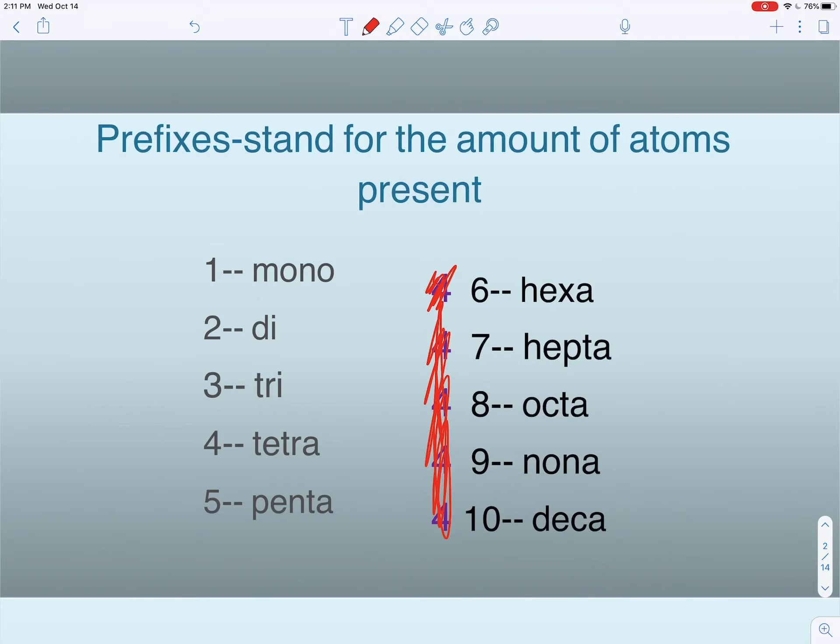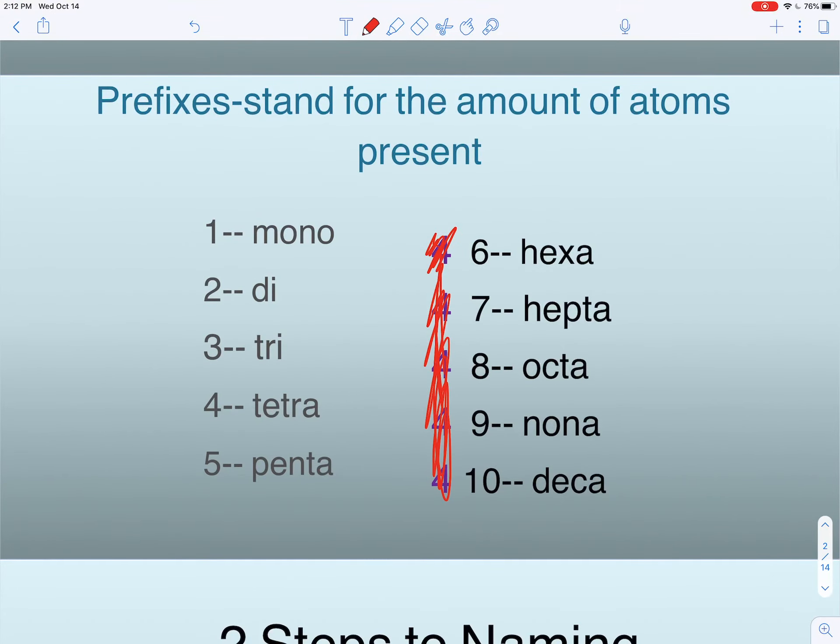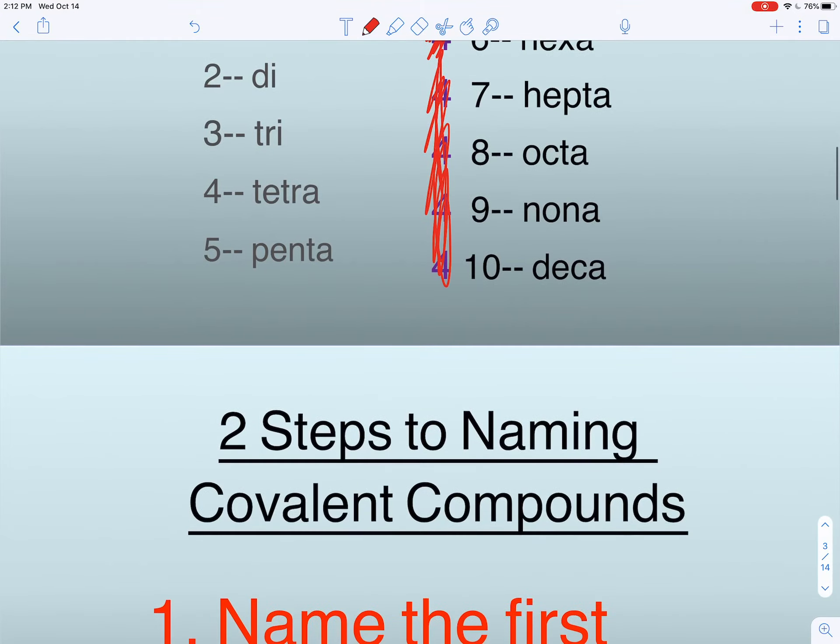One is mono, two is di, three is tri, four tetra, five penta, six is hexa, seven hepta, eight octa, nine nona, and ten deca.